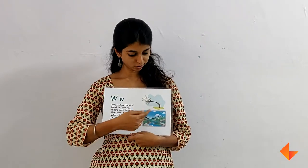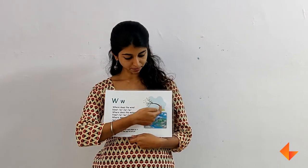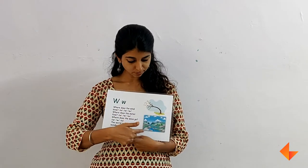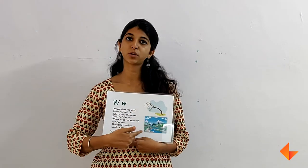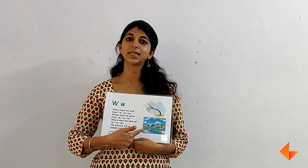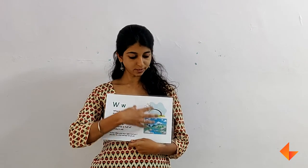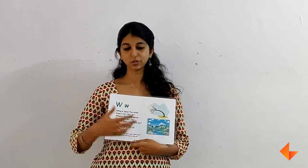Ask children questions like what is happening to make this tree bend over — the wind is blowing. Ask them questions about where the water is flowing in this picture. Once you have discussed the picture, you can move on to singing the song.